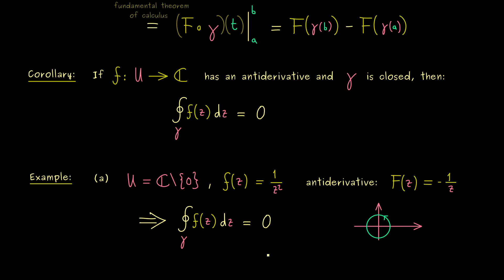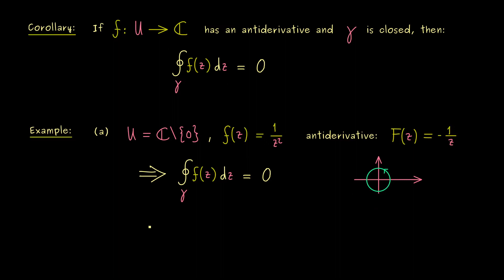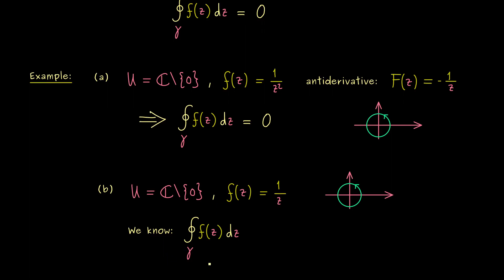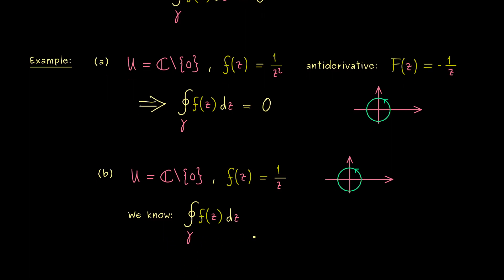However at this point maybe you remember the important example we had in the last video. There we can consider the same domain, but now with the function 1 over z. Indeed in the last video we have calculated what happens when we take the curve as a circle around the origin. More precisely the result we got was that this integral is equal to 2 pi i. And one possibility to get this curve here was to choose gamma defined on the interval 0 to 2 pi and set to e to the power i t.